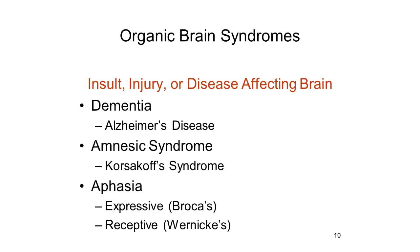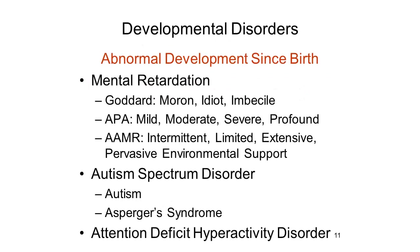First, there are the organic brain syndromes, in which there are gross impairments in mental function that result from known insult, injury, or disease in the brain or some other portion of the central nervous system. Alzheimer's disease is a clear example: the patient suffers memory loss and other aspects of dementia, resulting from plaques and tangles in cortical tissue. Other examples are the amnesic syndrome, such as suffered by patient HM, associated with damage to the hippocampus and related areas, and the various forms of aphasia, associated with damage to Broca's or Wernicke's areas.